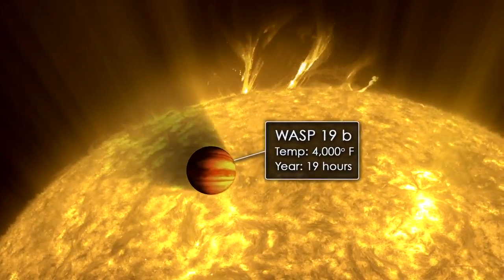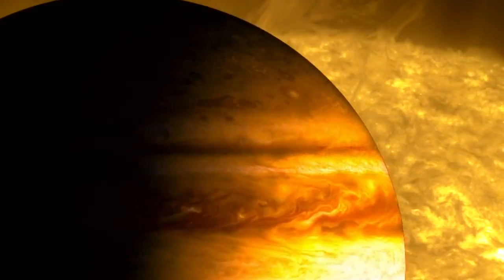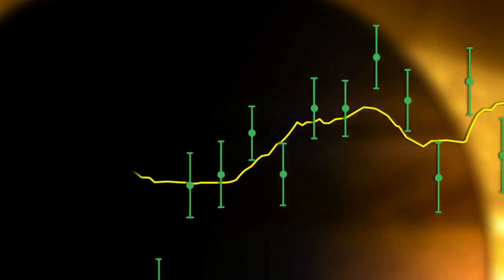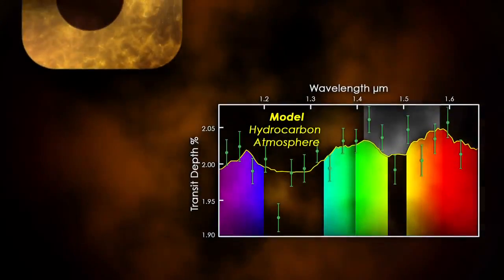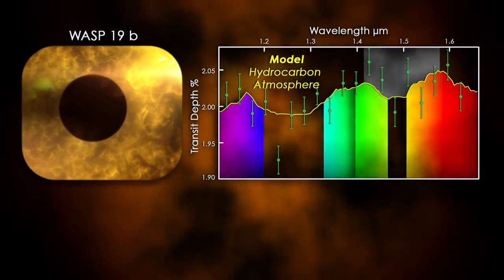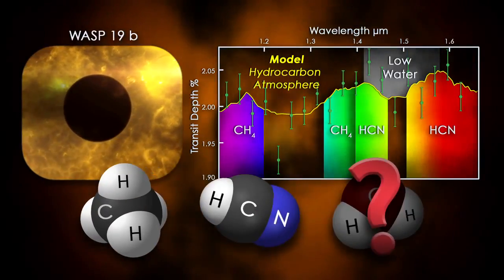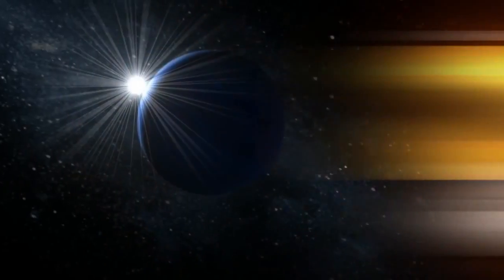Visitors who could survive the heat might complain about the air quality. Planet WASP-19b's jagged transit depth curve suggests a deep atmosphere of poisonous hydrocarbons, with methane and hydrogen cyanide far more abundant than water.